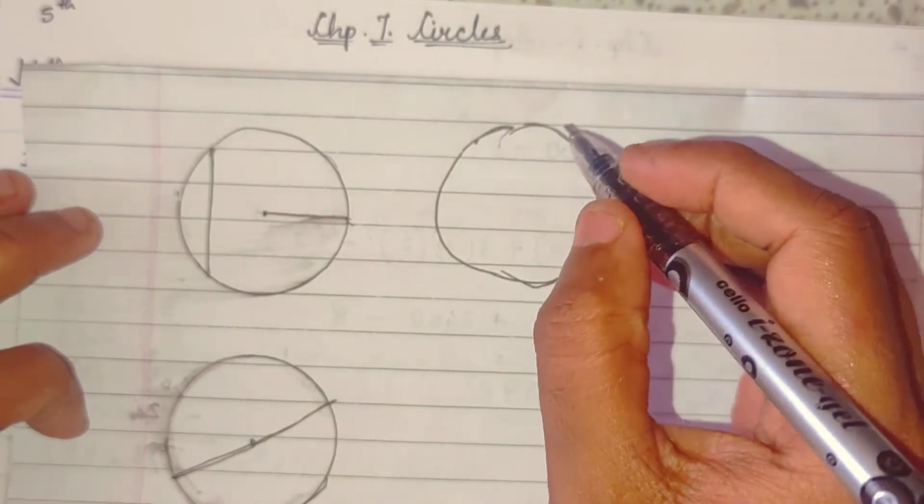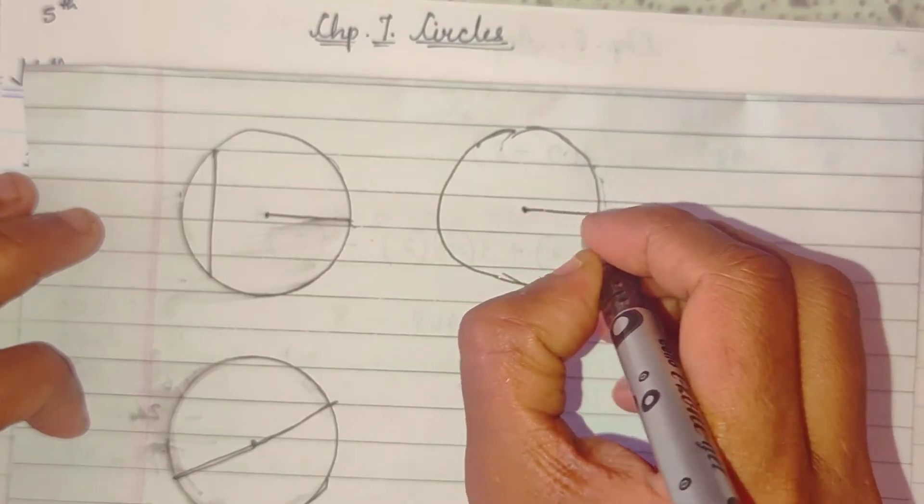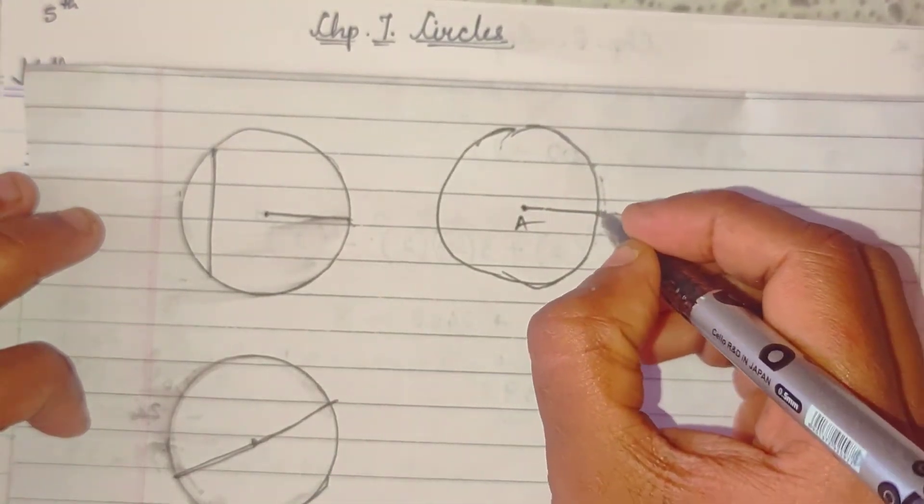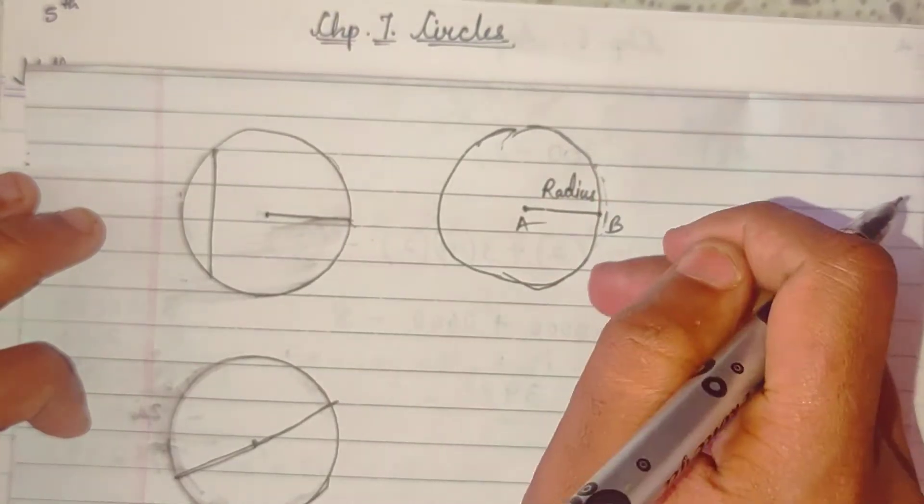When you draw with any measure, so ye jo circle banta hai, yahan se yahan tak. Look, this is said to be a radius. This part is radius.